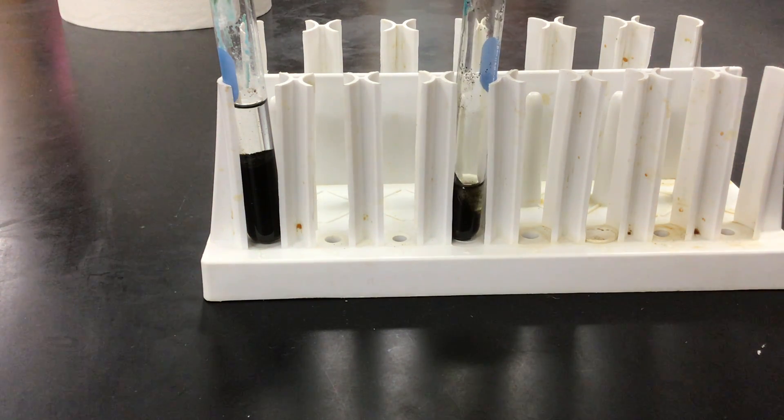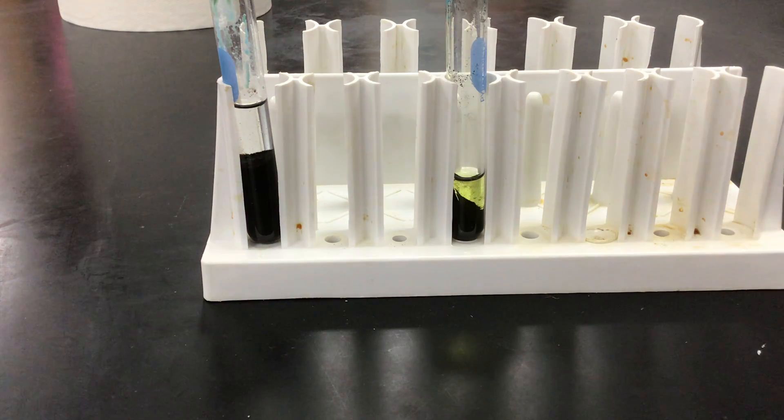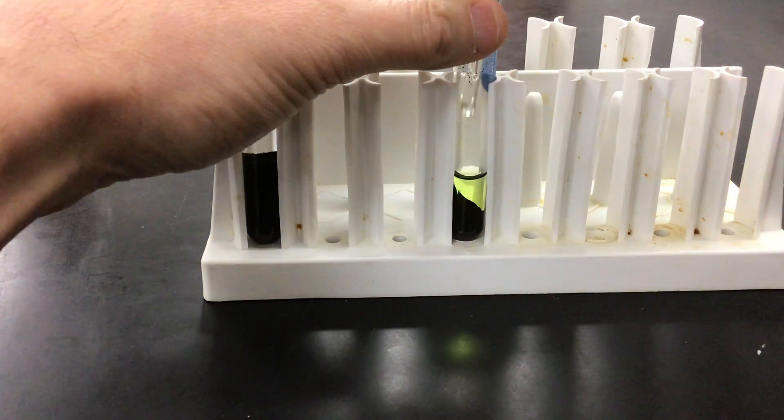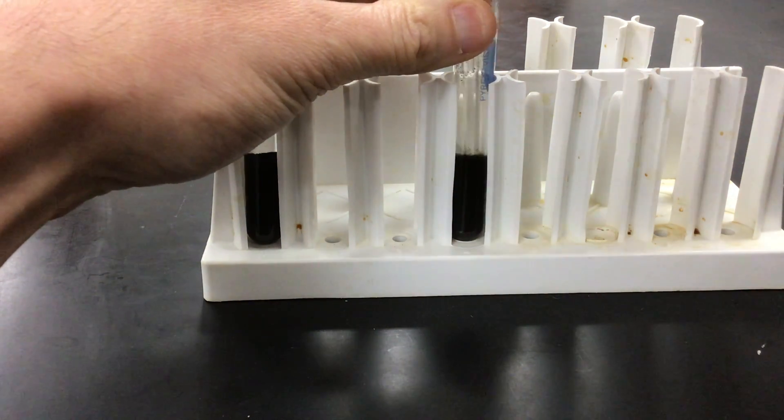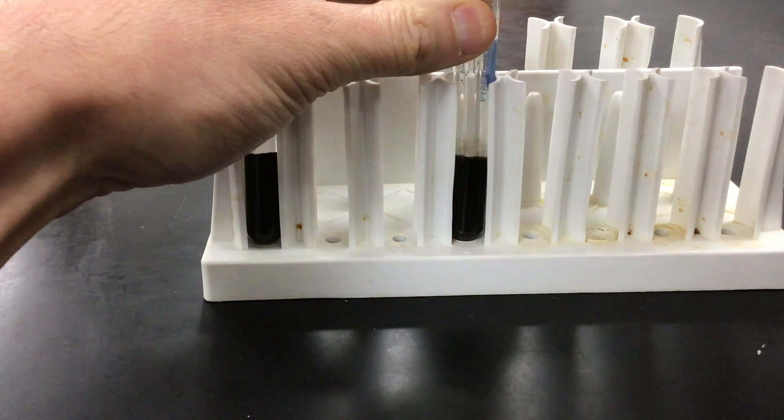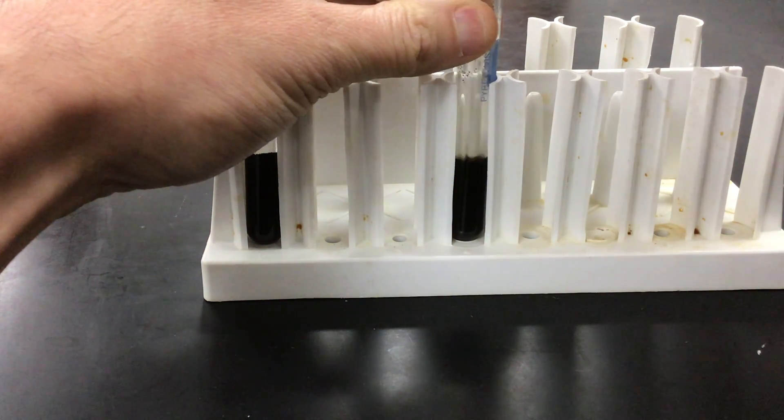I'm going to go ahead and add a small amount of HCl. You can already start to see a color change taking place. We'll stir it as we mix the acid together with it.